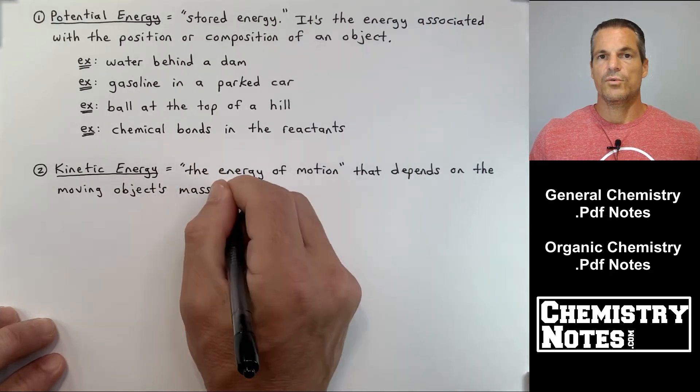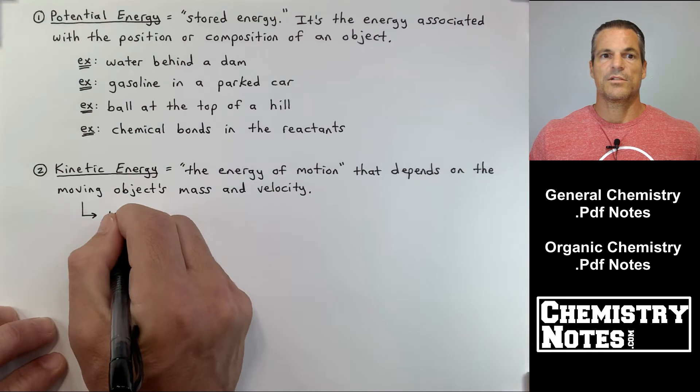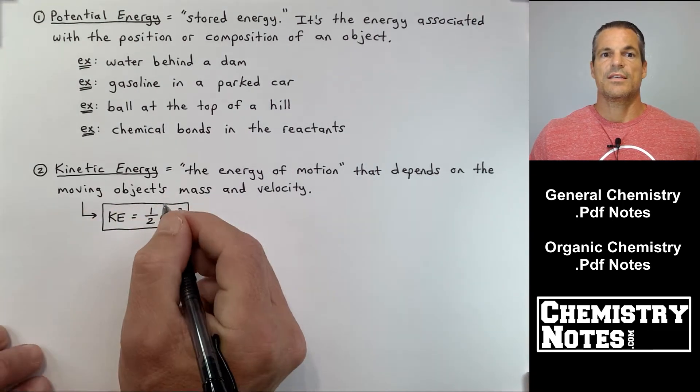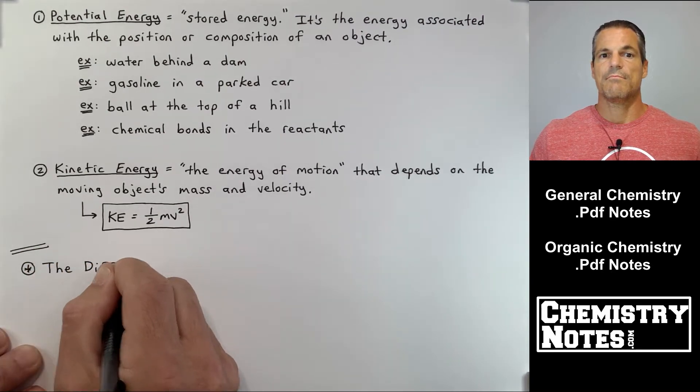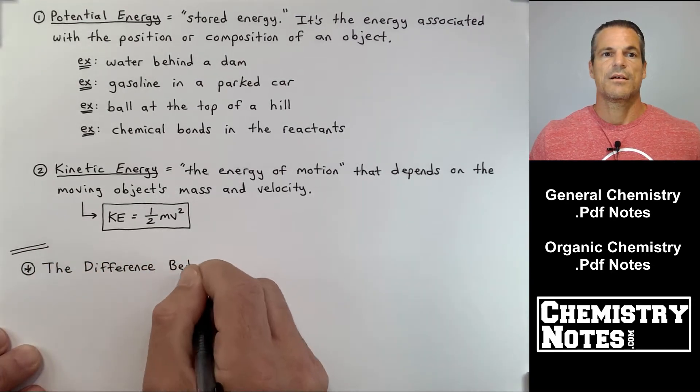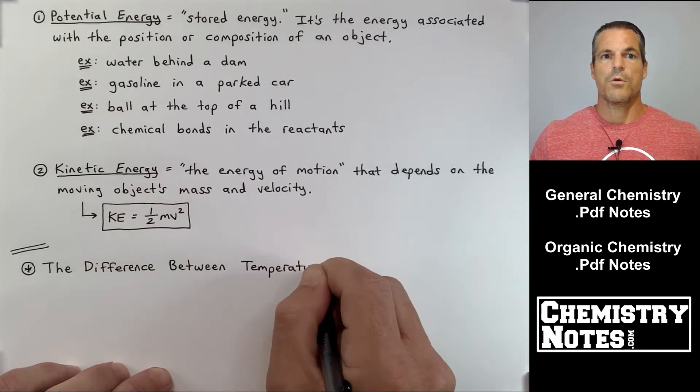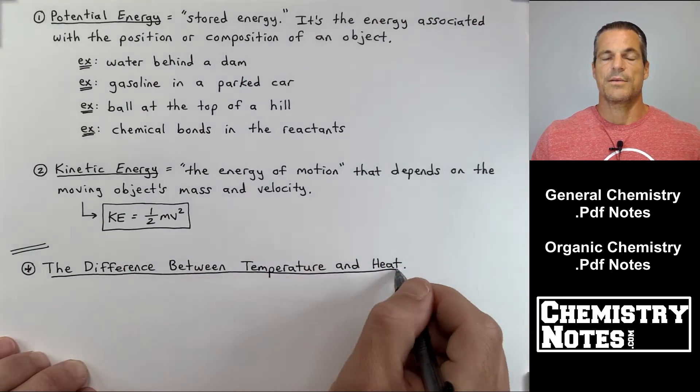Number two, the second type of energy. Number one was potential energy. So number two is kinetic energy. Kinetic energy is the energy of motion that depends on the moving object's mass and velocity. A ball flying through the air. That's a form of kinetic energy. A ball rolling down a hill is a form of kinetic energy.